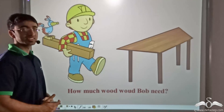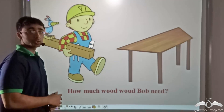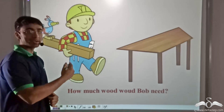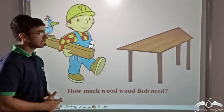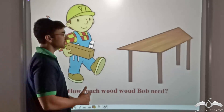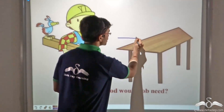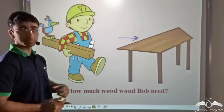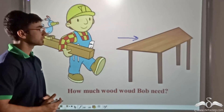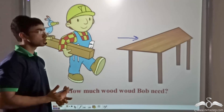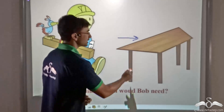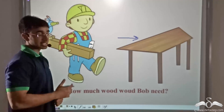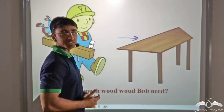In the picture over here, we see Bob the Builder. Bob is a very experienced carpenter and a person in his town came to him with a certain problem. The problem was that the person wanted a wooden table in the shape of a trapezium. Bob wondered how much wood he would need to construct this particular table, and in order to know that, he would have to find the area of a trapezium.